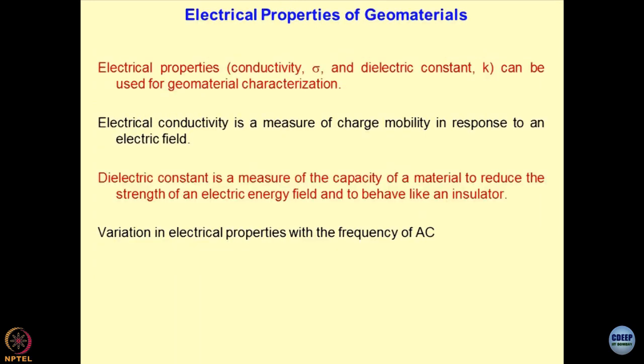Taking a real look at the electrical properties of geomaterials: as we discussed, conductivity and dielectric constant are the two major parameters used for defining the state of the material. Conductivity comes because of the movement of charges. Here we talk about the variation of electrical properties as a function of frequency of AC.